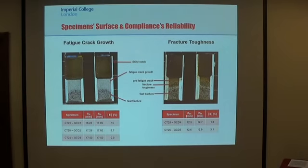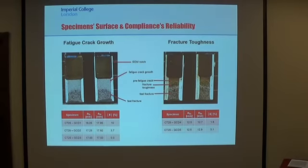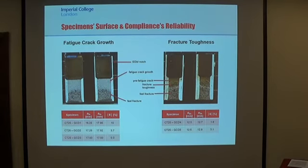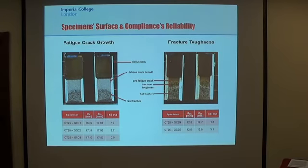Post-testing, some high-resolution pictures of the fracture surface were taken in order to measure the crack length directly on the fracture surface and to assess the compliance reliability. As you can see from the percentage errors summarized in the tables under the pictures, the compliance technique revealed to be quite reliable in predicting the instantaneous crack length, with errors between 0 and 10%.